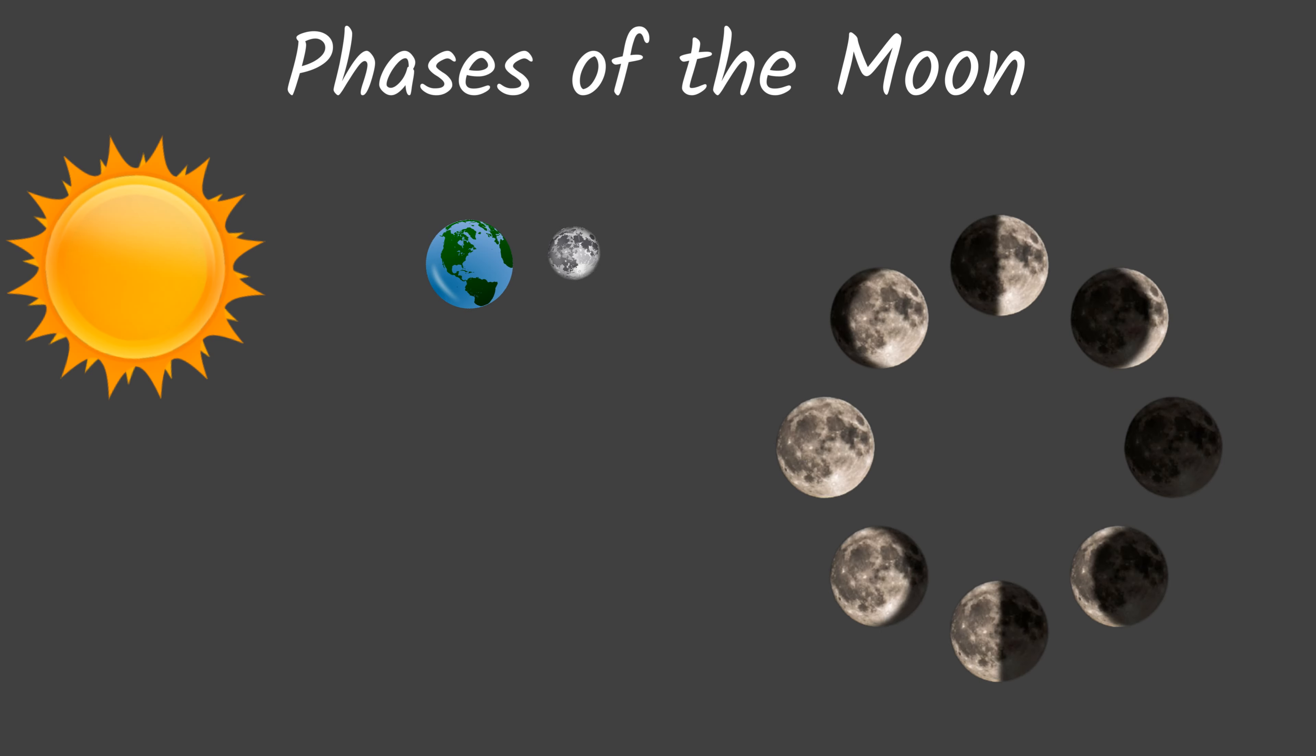Let's actually look at those different phases. We're going to start with our new moon over here on the far right. So the first phase is a new moon. As the new moon moves around, we move to a waxing crescent. And then we go from a waxing crescent to a first quarter. First quarter moon proceeds to a waxing gibbous.